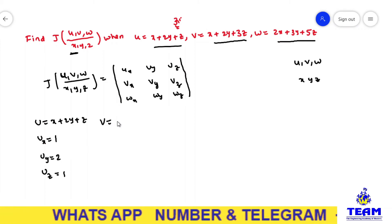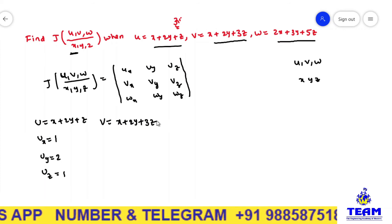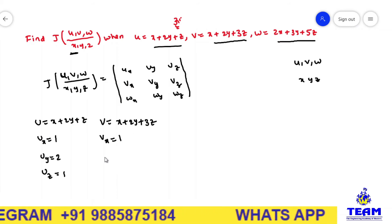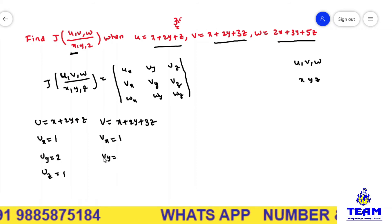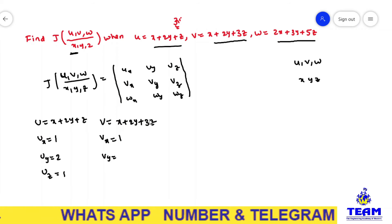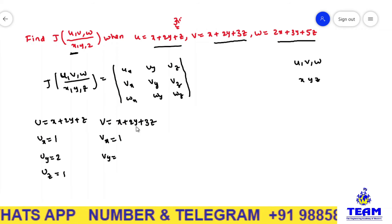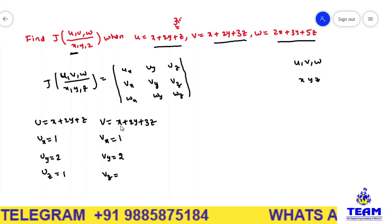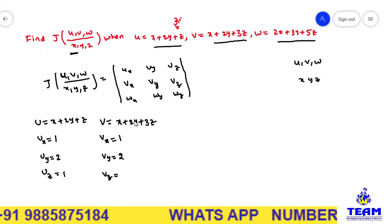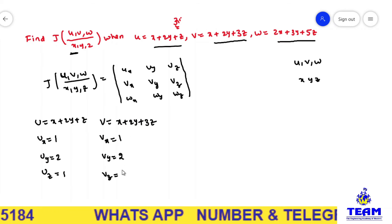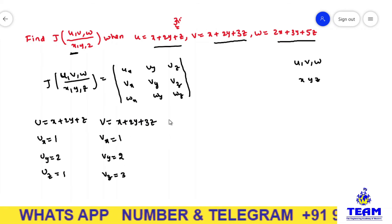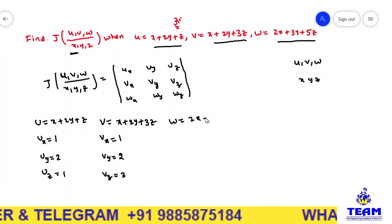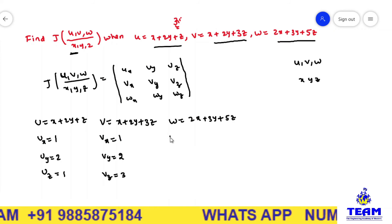Similarly for v: v is equal to x plus 2y plus 3z. So ∂v/∂x equals 1, ∂v/∂y equals 2, and ∂v/∂z equals 3. For w: w is equal to 2x plus 3y plus 5z. So ∂w/∂x equals 2, ∂w/∂y equals 3, and ∂w/∂z equals 5.